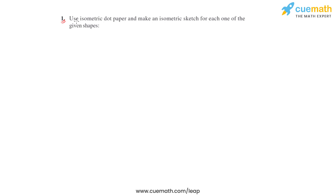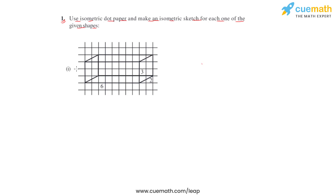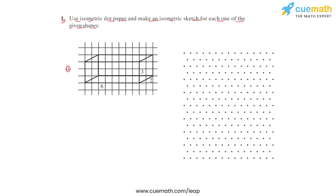In question number one of the second exercise, we have been given a few shapes and using an isometric dot paper we'll have to make an isometric sketch for each one. We'll use this isometric dot paper, which is a sheet that divides the paper into small equilateral triangles made up of dots, to draw solid shapes so that we can see all the faces of a 3D figure on a piece of paper.